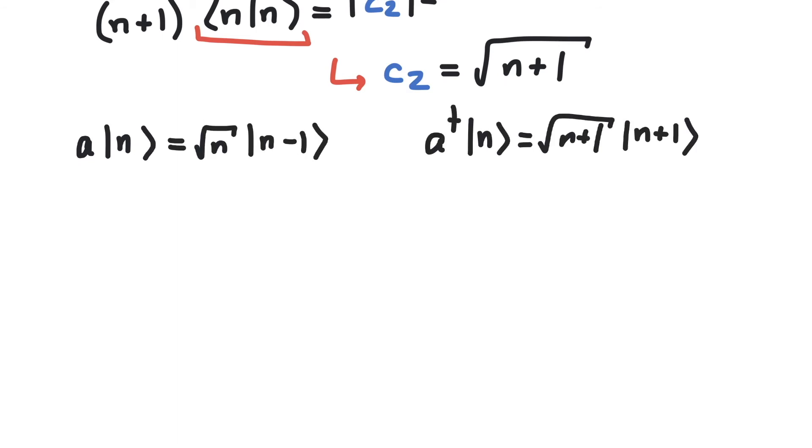For example, if we apply a on the state 4, what we get is the square root of 4 times the state 3. Or if we apply a dagger on the state 7, this gives us the square root of 8 and the state 8.